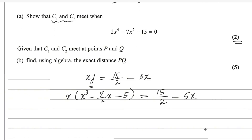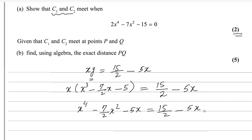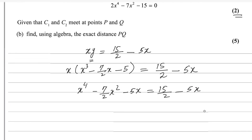Now we will simplify this. Expanding the bracket, we get X⁴. X multiplied by minus 7 over 2 gives minus 7 over 2 X². And X multiplied by minus 5 gives minus 5X, on the right-hand side we keep 15 over 2 minus 5X. Whenever there is a fraction in the equation, it is better to multiply by the highest denominator — the denominator is 2 here.